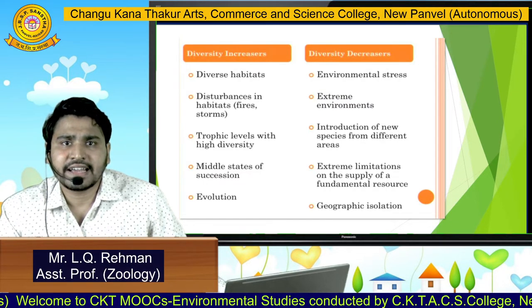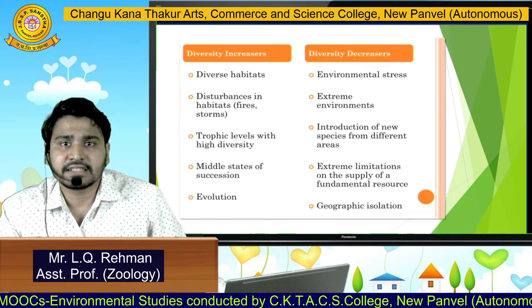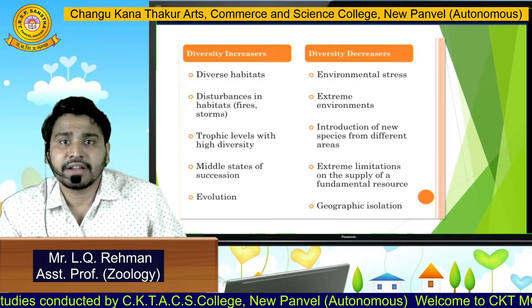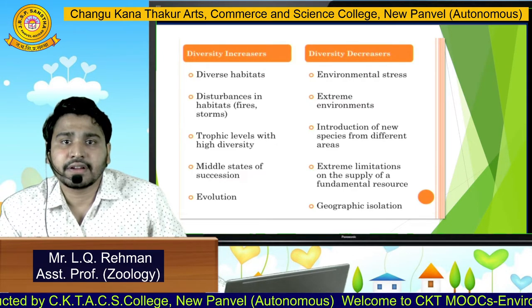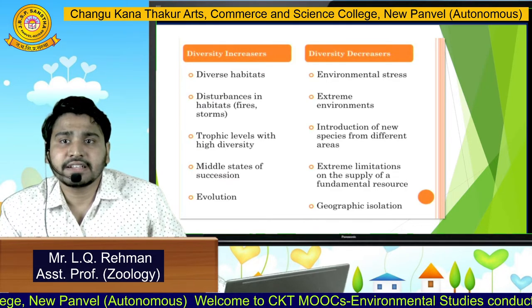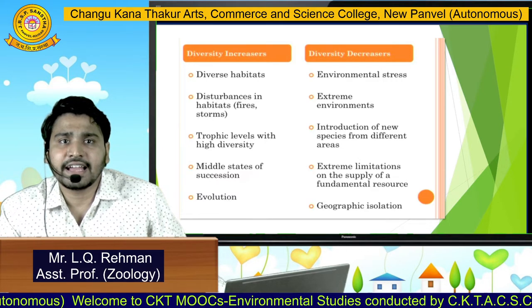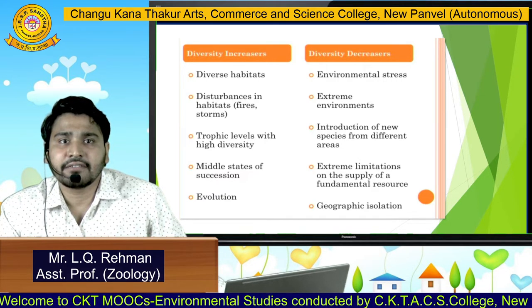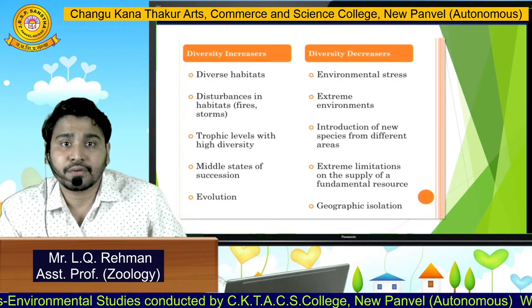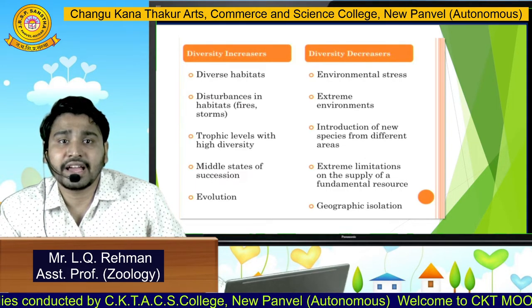What is diversity? Diversity is basically variations. If the diversity increases, we will have diverse habitats, and there will be disturbances in habitats — fires or storms. In the trophic levels, high diversity will be present, and there will be middle states of succession and evolution. But if the diversity decreases, there will be environmental stress, extreme environments, introduction of new species from different areas, and extreme limitations on the supply of resources.